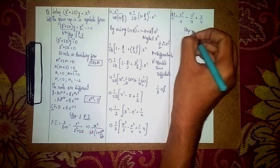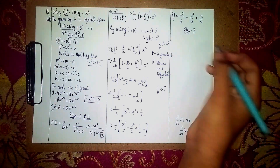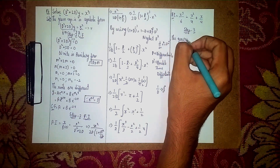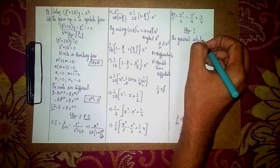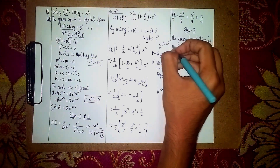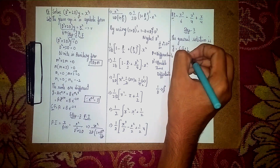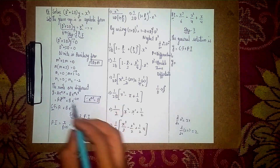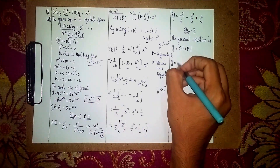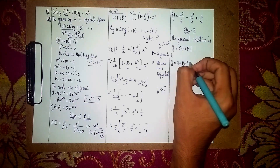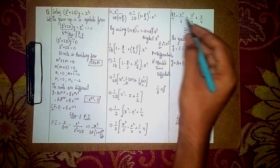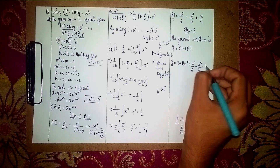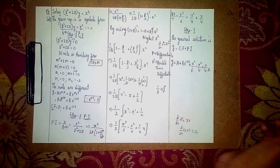Step 3 is to find the General Solution. The General Solution is: y = CF + PI. Substituting: y = A + B·e^(−2x) + x³/6 − x²/4 + x/4. This is our General Solution. Thanks for watching.